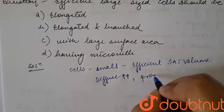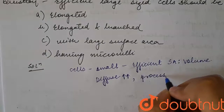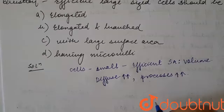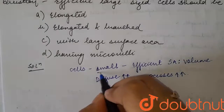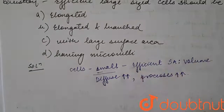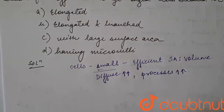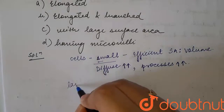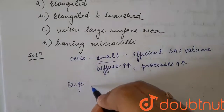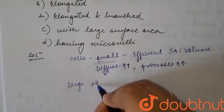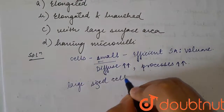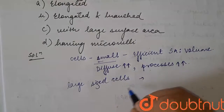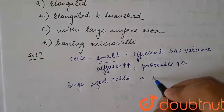All their processes will be a lot faster because of their smaller size. While for large size cells to become more efficient,